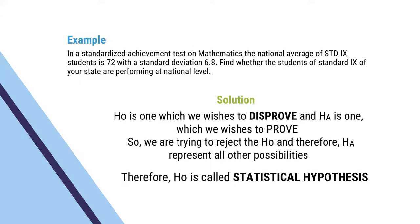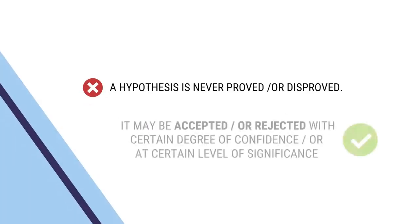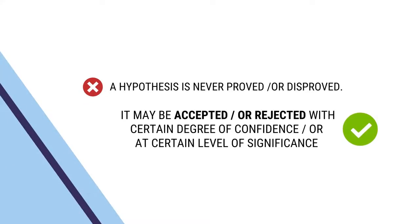We are trying to reject the null hypothesis, and therefore, alternate hypothesis represents all other possibilities. Therefore, null hypothesis is called statistical hypothesis. Why is a null hypothesis called a statistical hypothesis? A hypothesis is never proved or disproved. It may be accepted or rejected with a certain level of confidence or at a certain level of significance.